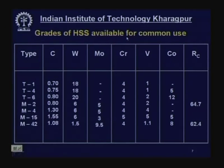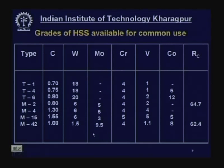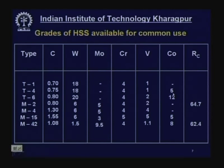The grades of high speed steel available for common use include T1, T4, and T6. These have carbon around 0.7–0.8%, with tungsten as the main alloying element, chromium for hardness and wear resistance, vanadium at 1–2%, and cobalt at around 5%. Later, 5–12% cobalt was added to enhance hot hardness and hot strength.